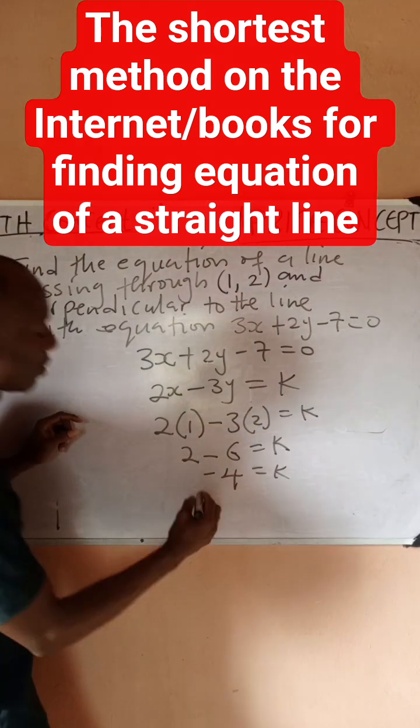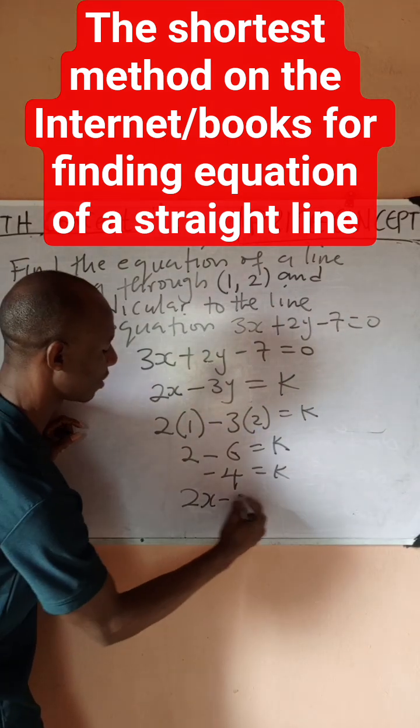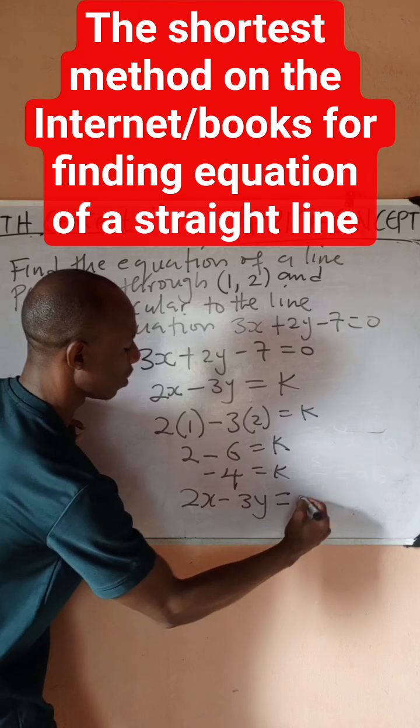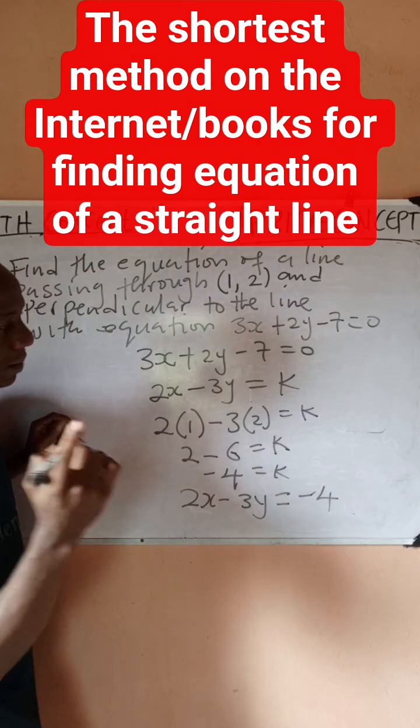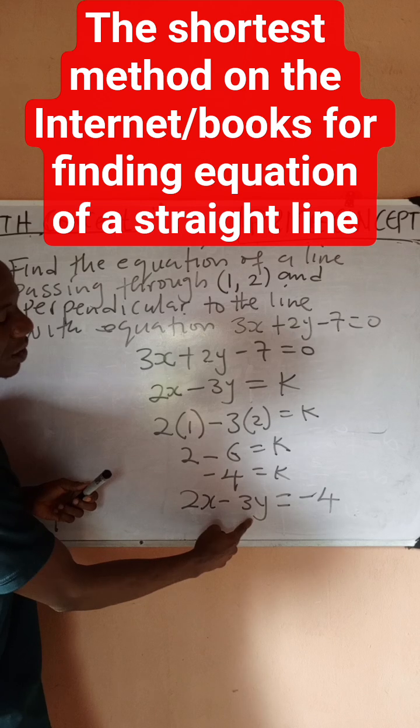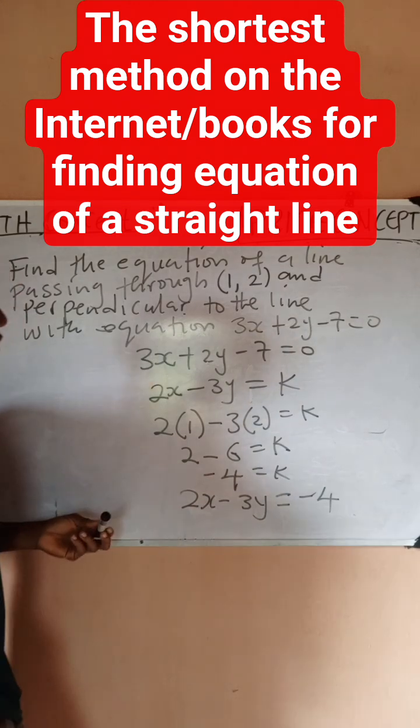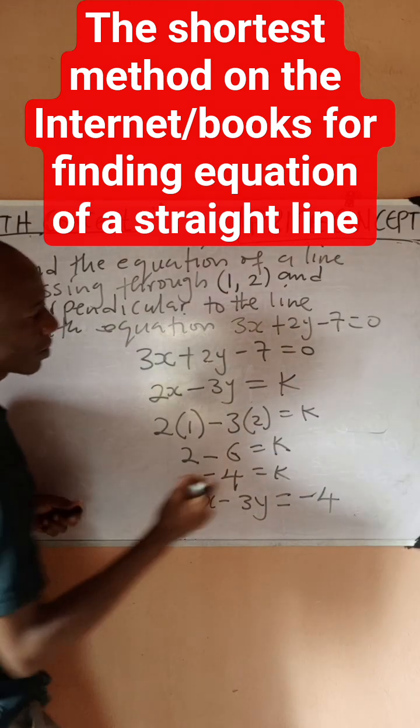Which is going to be 2x - 3y equals minus 4, or simply put you can say it is 2x - 3y + 4 equals 0.